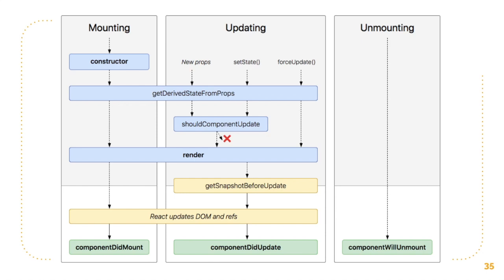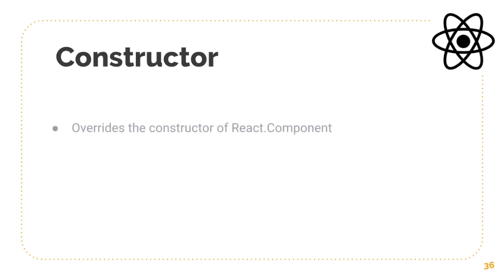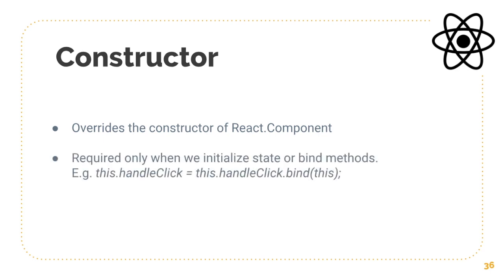The constructor method was already discussed in the previous video, but just to recap: the constructor method overrides the constructor of the React.Component class. It is required only when we initialize state or bind methods. If you're using an ES5 function — not an arrow function — and you want to bind the value of 'this', that's when you use the constructor method, or if you want to initialize state.